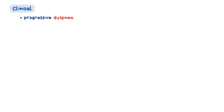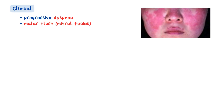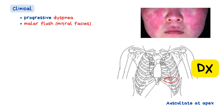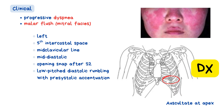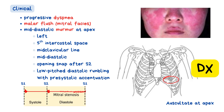The clinical presentation of mitral stenosis often begins subtly, then gradually progresses. One of the earliest and most common symptoms is progressive dyspnea — increasing shortness of breath, especially with exertion — due to elevated pressures in the pulmonary circulation as blood backs up from the obstructed mitral valve. On physical examination, a patient may exhibit a malar flush, a reddish-purple discoloration over the cheeks, thought to be due to vasodilation and chronic hypoperfusion. Auscultation at the apex reveals a mid-diastolic murmur preceded by an opening snap just after S2, characterized by a low-pitched diastolic rumble ending with presystolic accentuation.